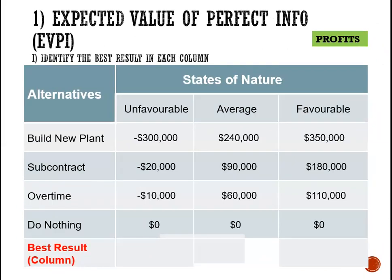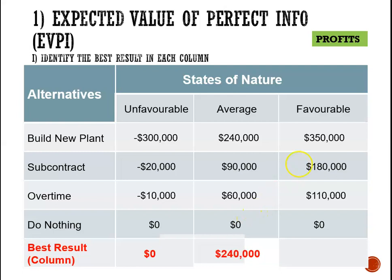Step one: identify the best result for each state of nature, or for each column. So in the first column, we have negative 300,000, negative 20,000, negative 1,000, and 0. Of these, the best is 0, since we prefer not to lose any money than to lose money. For the average column, we have 240,000, 90,000, 60,000, and 0. The highest of these profits is 240,000. For the favorable column, we have 350,000, 180,000, 110,000, and 0. And the highest profit in this column is 350,000 dollars.